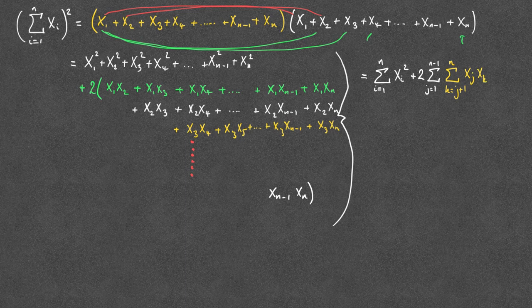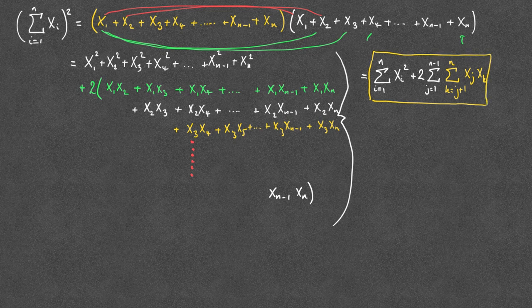So this is what we get when squaring the sum of the xi's: the sum of the xi squareds plus all of these cross product terms.